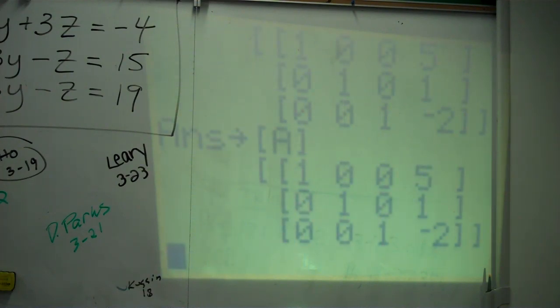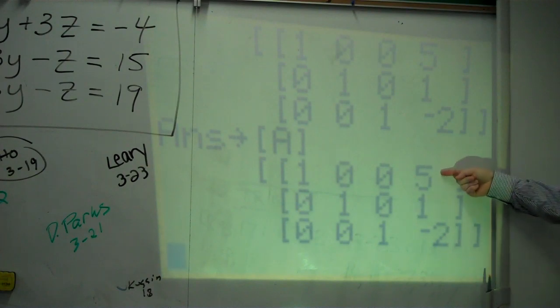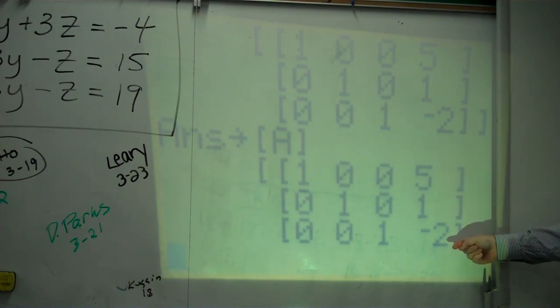You're at nine minutes. And now you can see that your solution is there. One's done in the diagonal. Zeros everywhere else. X is five, Y is one, and Z is negative two. We're done. That one was nice. The problem is done.